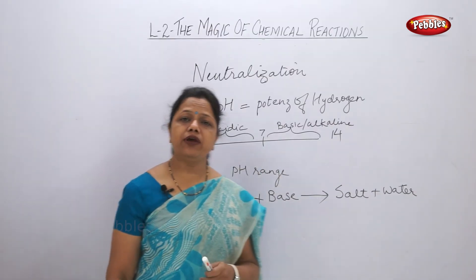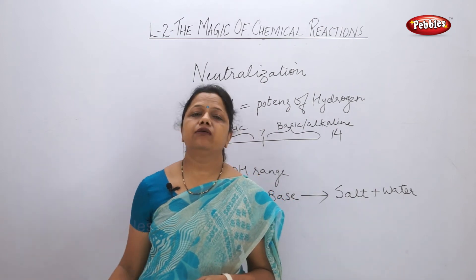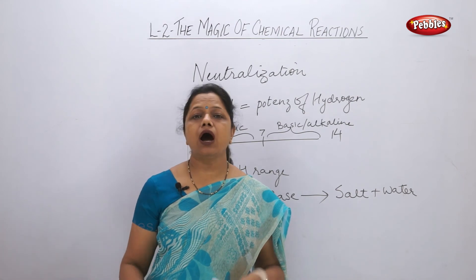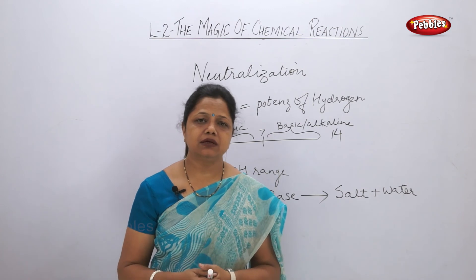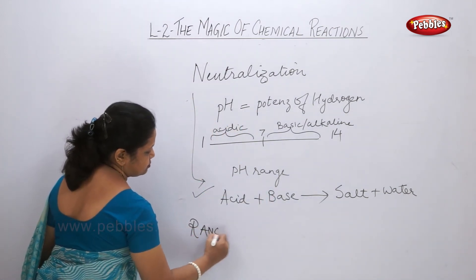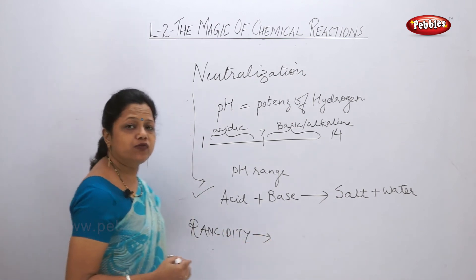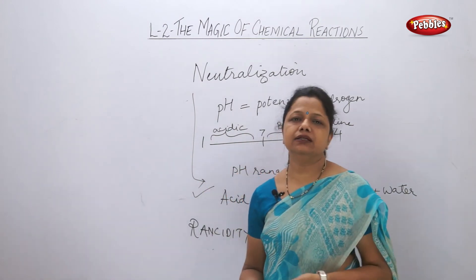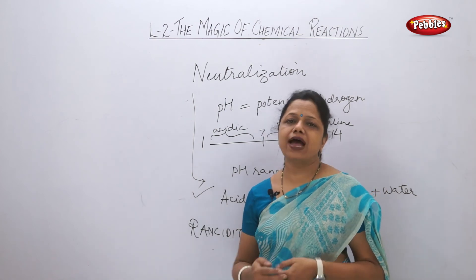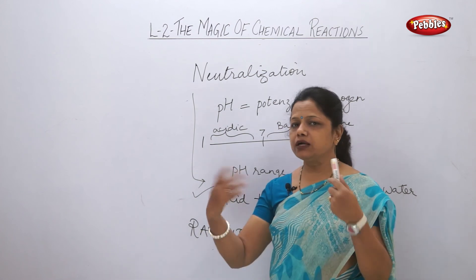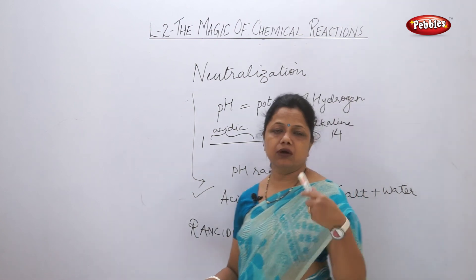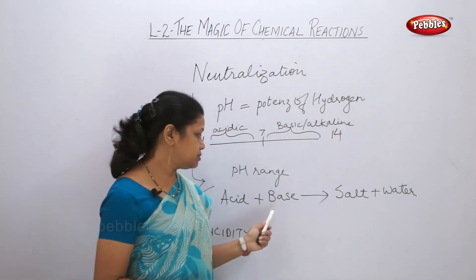So this was the whole lesson where we have understood so many things. We understood the various types of chemical reactions, how to balance a chemical equation, what is oxidation and what is reduction, how to prevent oxidation, and how oxidation of fats takes place. This oxidation of fat or food is given the name rancidity. When food gets spoiled, in chemical language we say the food got rancid — rancid means spoilage, and this spoilage of food due to oxidation of fats is called rancidity. We also learnt about corrosion and what is the neutralization reaction.